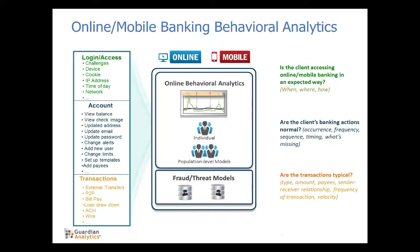Each account holder has their own thumbprint of how often they do certain activities, and the timing and frequency associated with those activities. Therefore, when there is a change in activities during online banking sessions, Guardian Analytics can identify it and alert a financial institution to those changes. Finally, we look at whether transactions initiated through the online and mobile channels are typical — are the dollar amounts, payees and beneficiaries matching up with established history for an account? Have they sent money to that individual before? Is this dollar amount typical? This gives us a 360-degree view of all online and mobile banking activity across an entire customer base to identify sessions that represent the most significant risk.